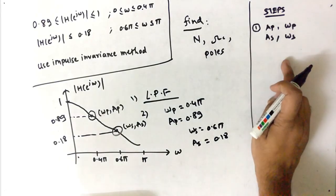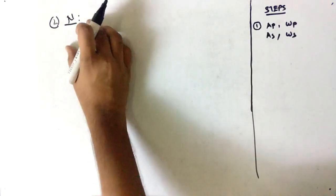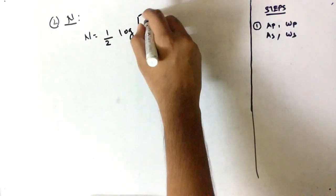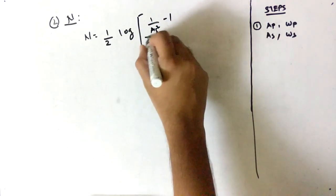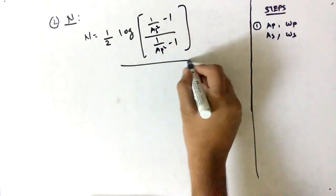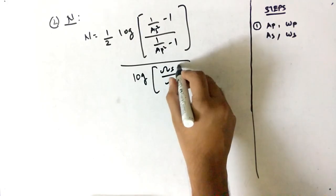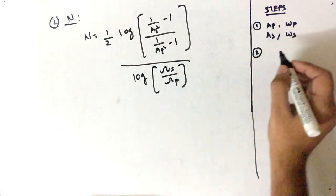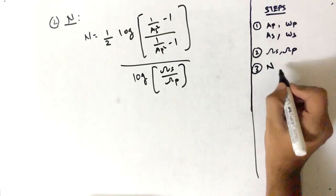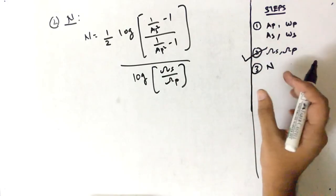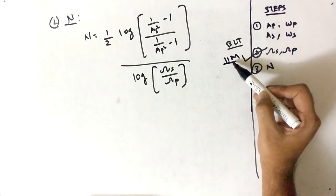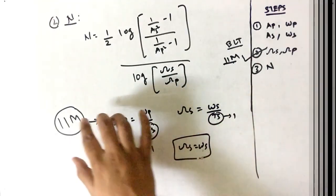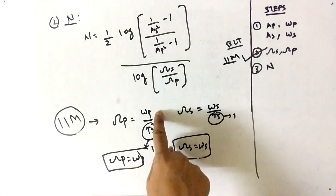The second step is about finding the analog frequency — this is the decisive step because the formula differs between BLT and impulse invariance method. For the impulse invariance method, the formula is Ωp = Wp / Ts and Ωs = Ws / Ts, where the digital frequency divided by Ts gives the analog frequency. We assume Ts equals 1.